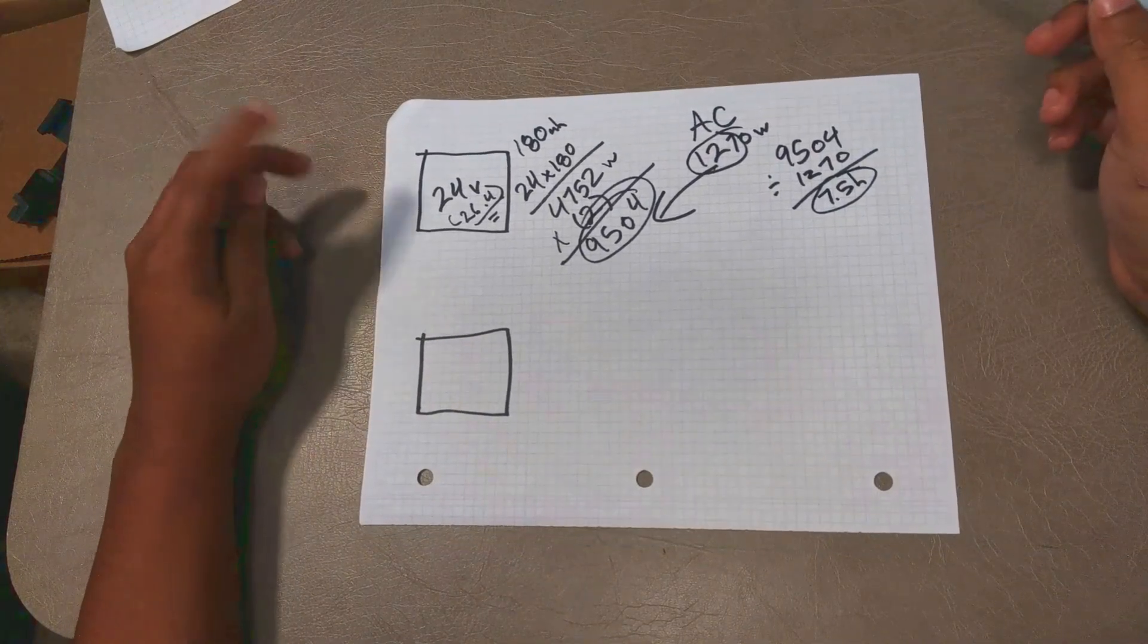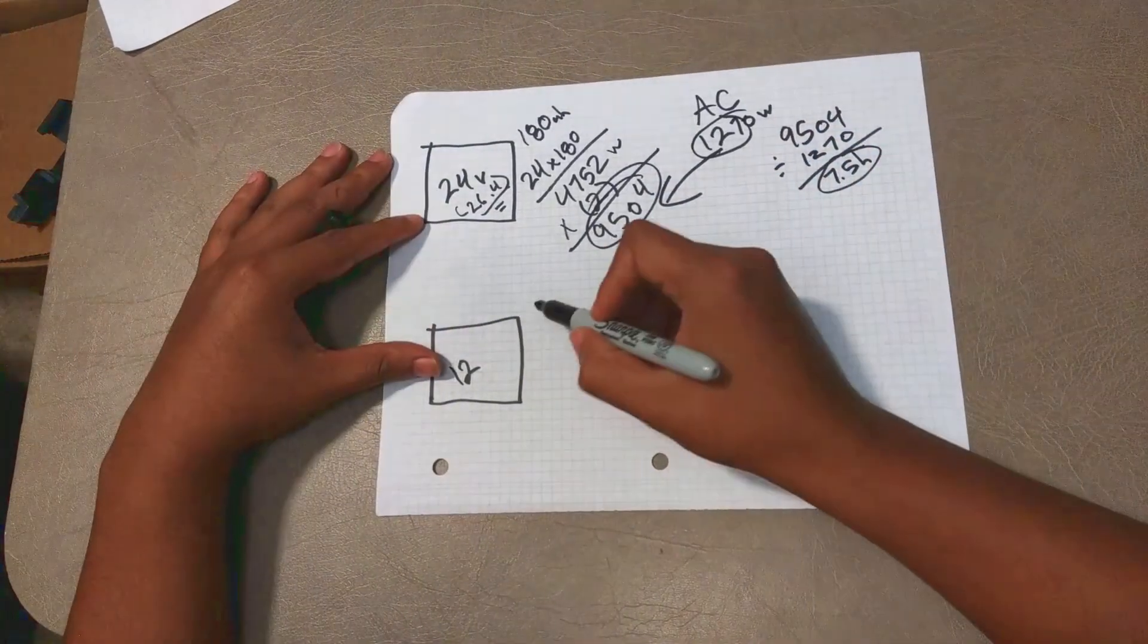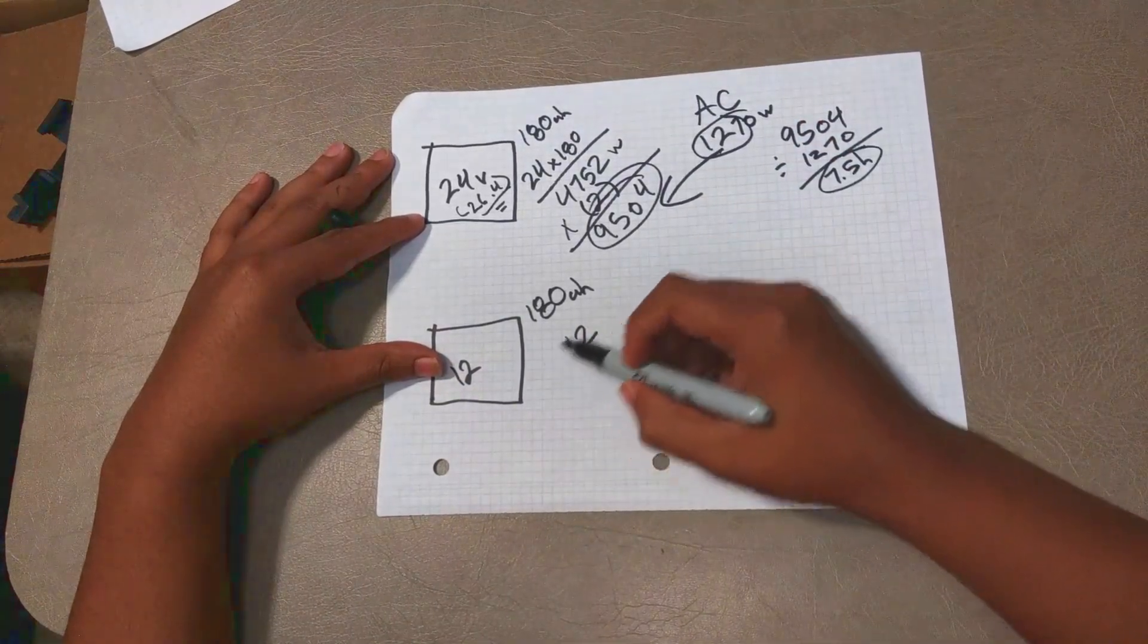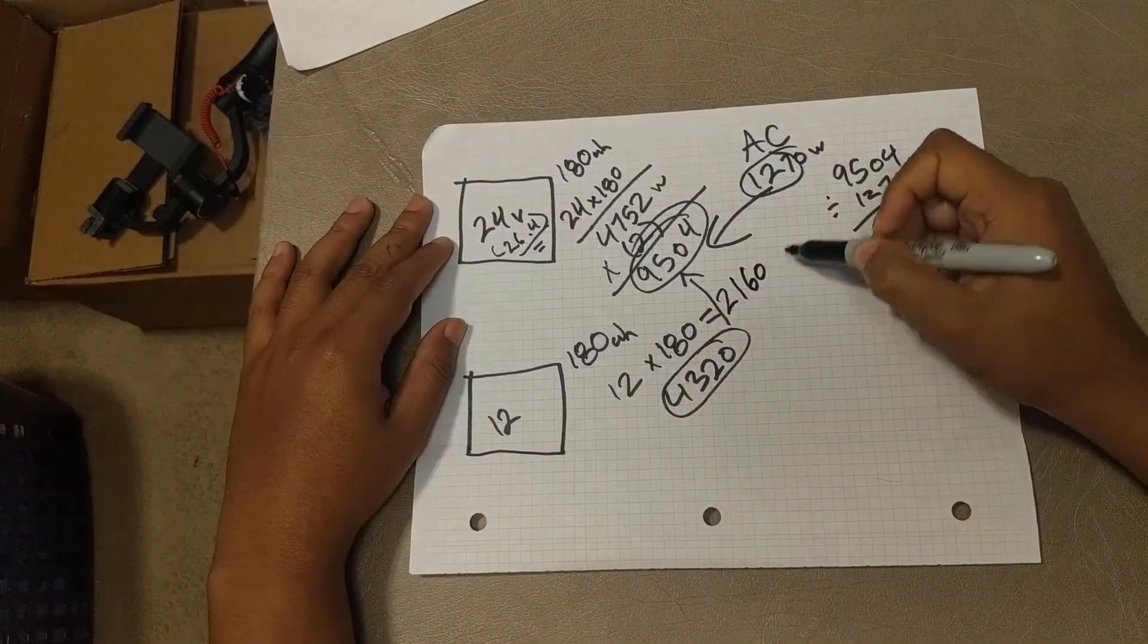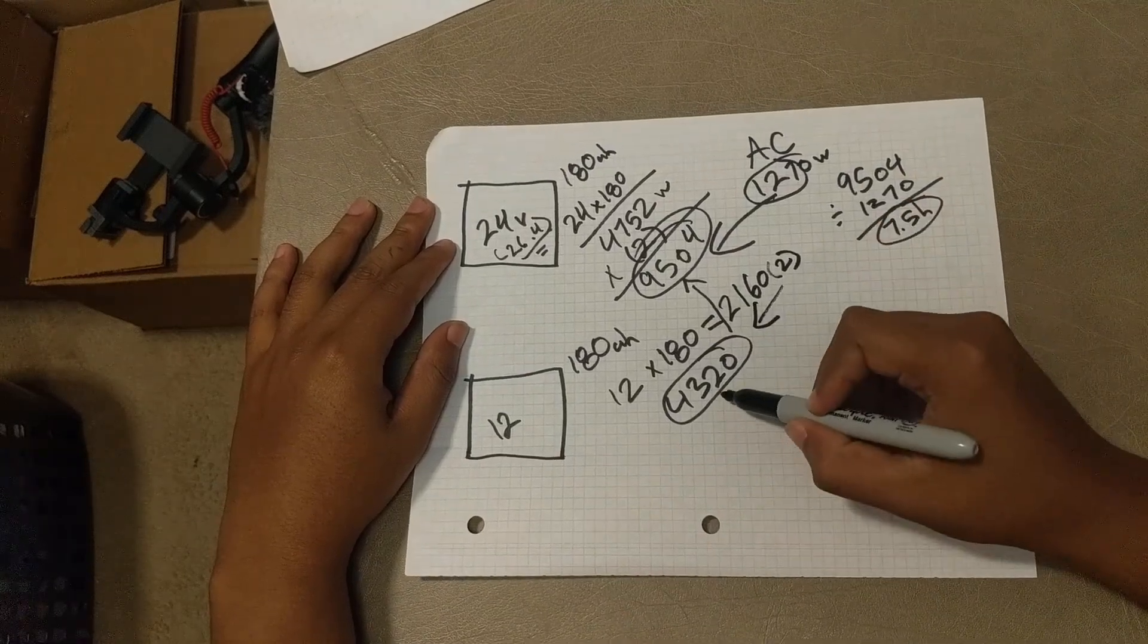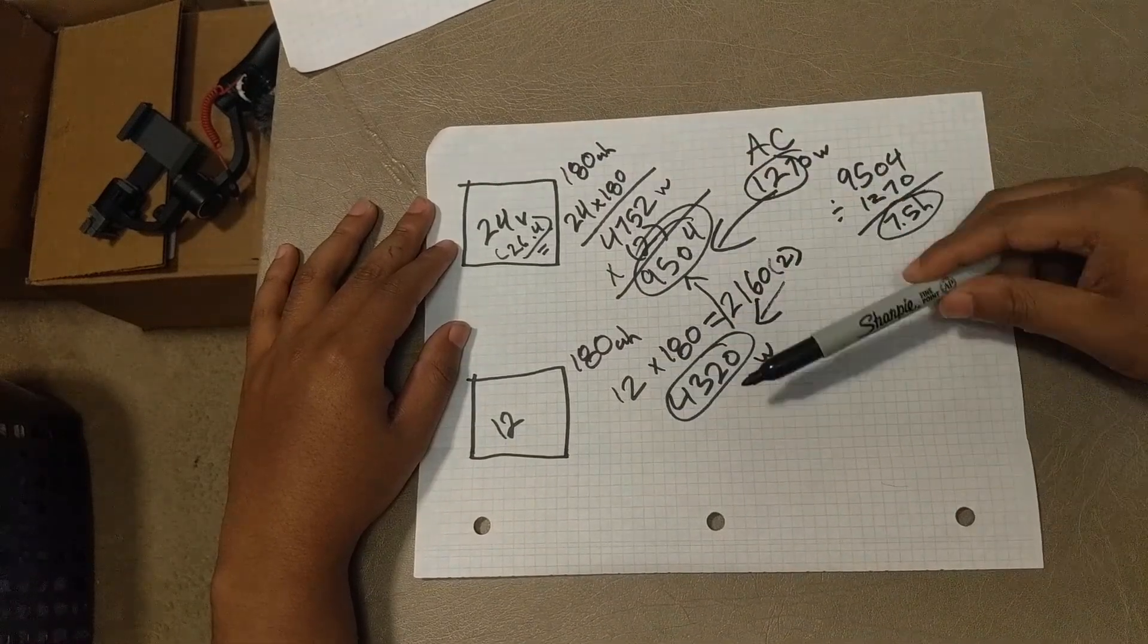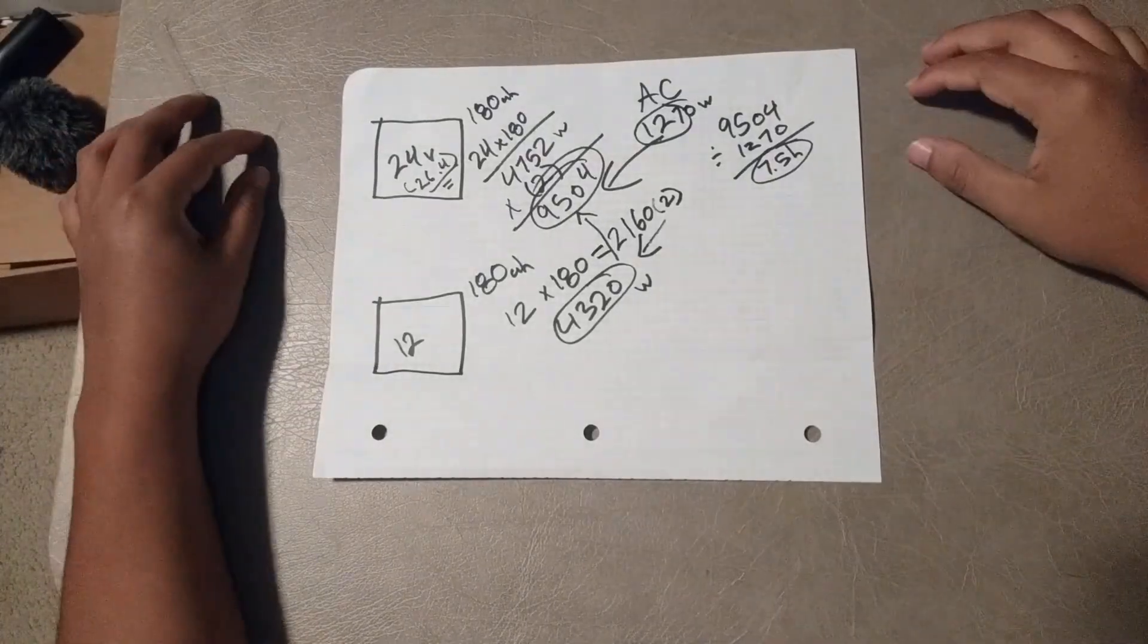So just to compare this with a 12 volt system, if we had the exact same batteries but they were 12 volt, so we had it at 180 amps as well, we do our 12 times 180 which equals 2160 and if we multiply that by our battery bank which is 2, we get a total of 4320 for total watts in the whole system. So as you can see if we had a 12 volt system it would be about half of the amount of usable energy than the 24 volt system.